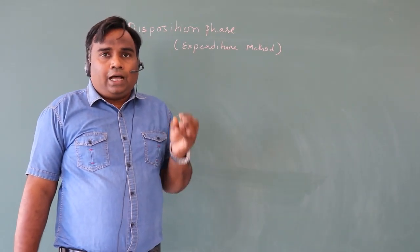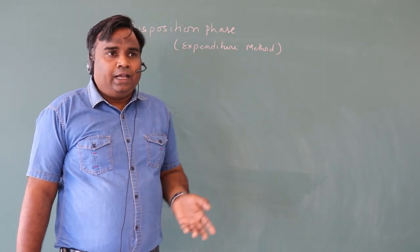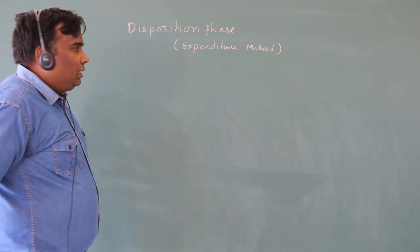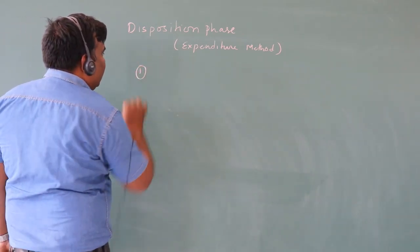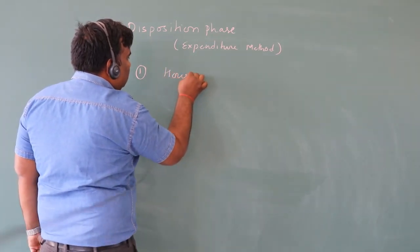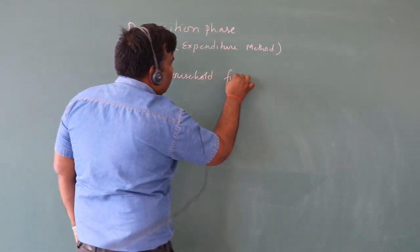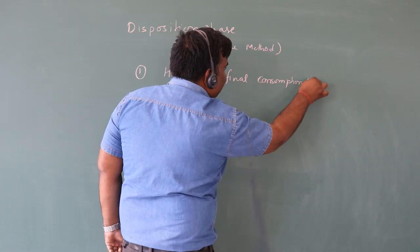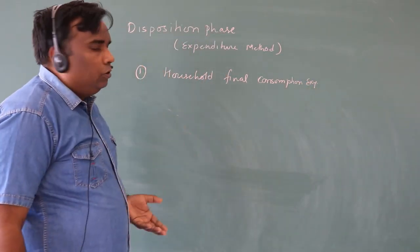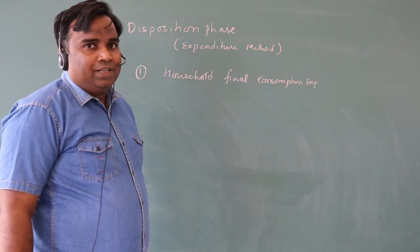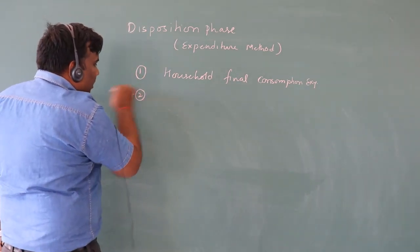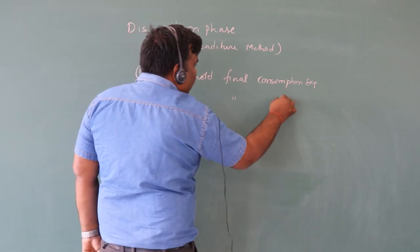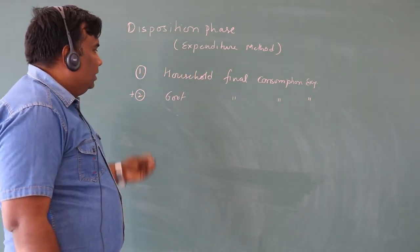Macroeconomics is based on Keynes' psychological law of consumption — effective aggregate demand is the driving factor rather than supply, which goes against Say's law. The first sector is the household sector, whose expenditure is called household final consumption expenditure.